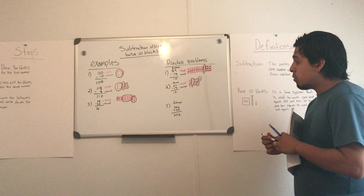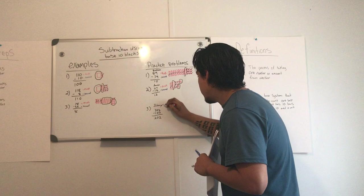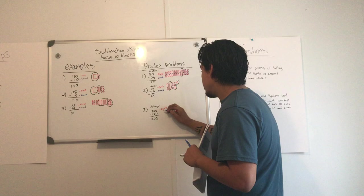And for the final one, Johnny, he has the bigger number and he did the same steps as Brianna and Javier. He went to his first number and drew the blocks for the first number.